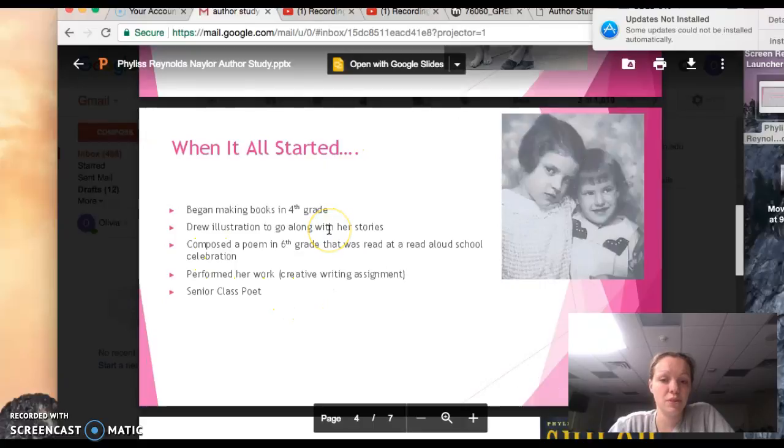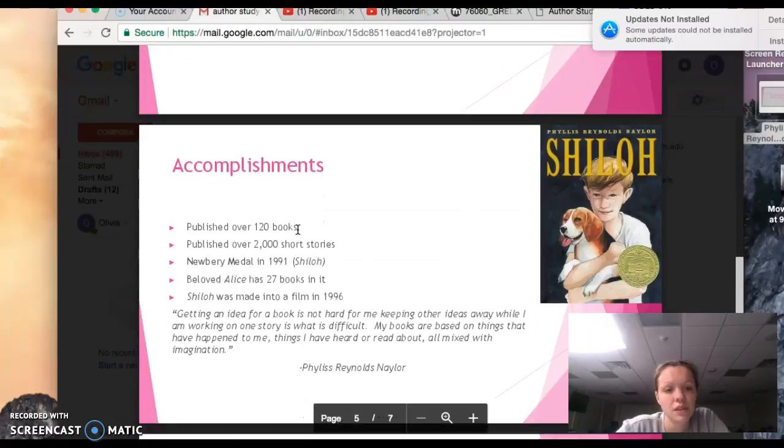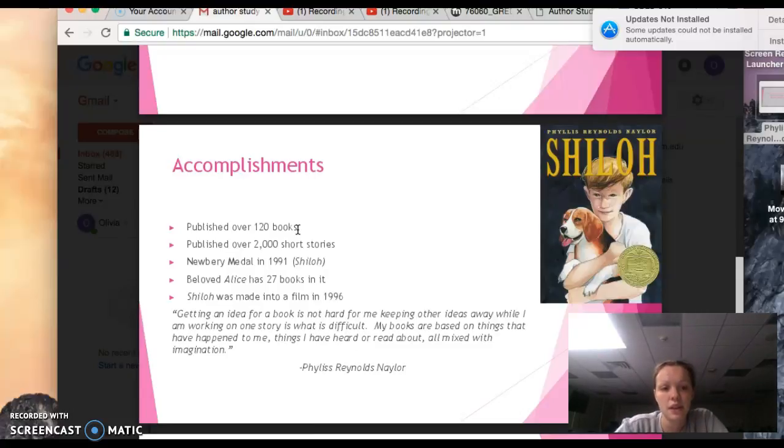She started making books in fourth grade. Her parents were very poor, so she found scrap paper and wrote on the backs of used paper, then stapled it together and drew pictures to go along with her words. She did various competitions and shared her work throughout school, graduating as the senior class poet. She's published over 120 books, 2,000 short stories, won a Newbery medal, and has written 27 books for the Alice series.